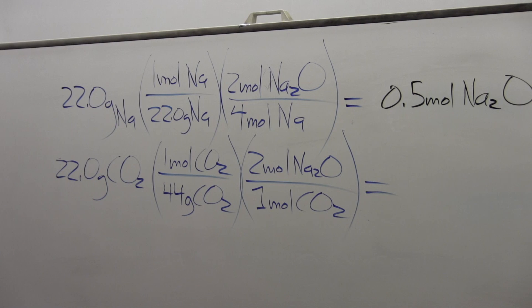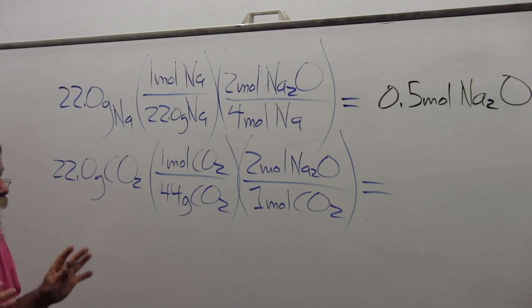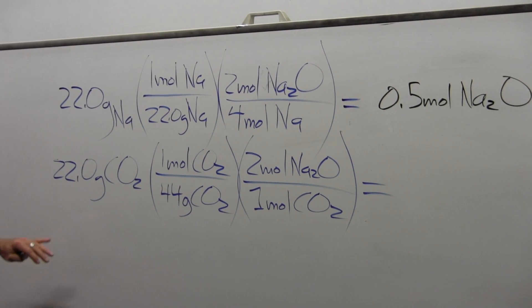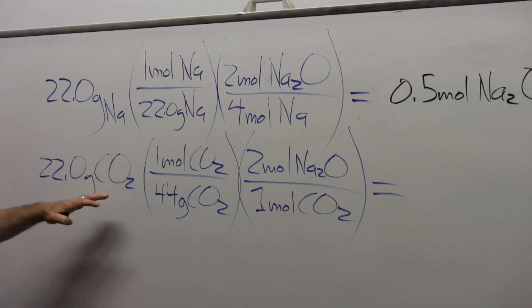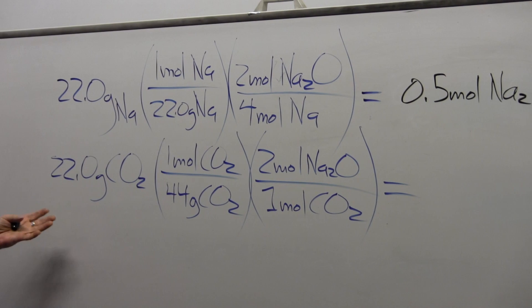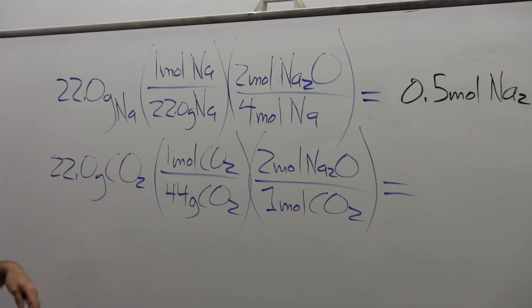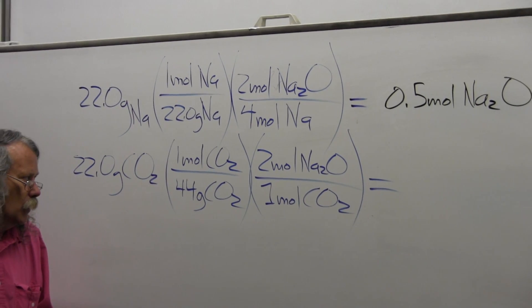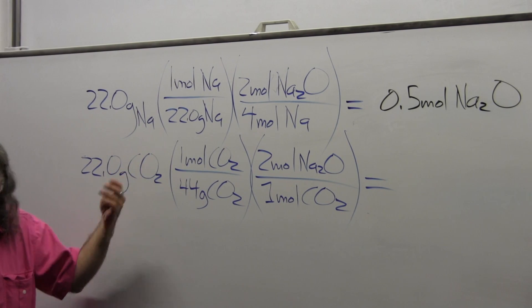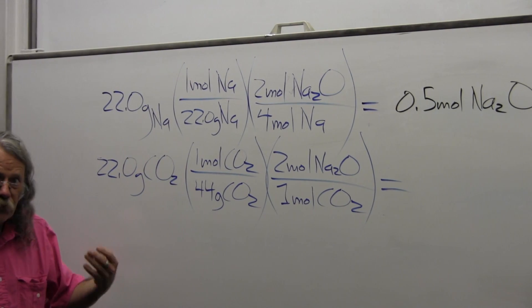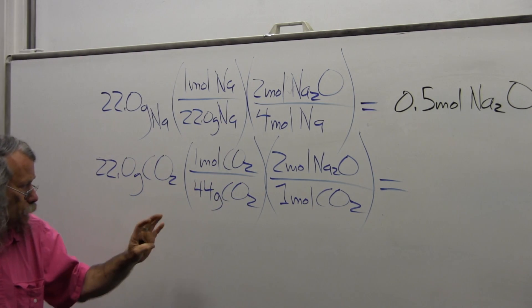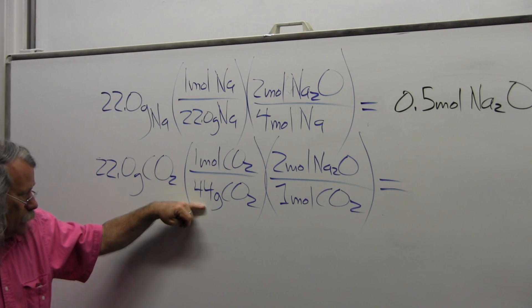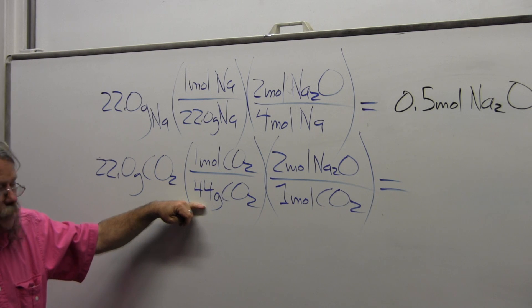Now we do the exact same setup with carbon dioxide. I start with the 22 grams of carbon dioxide. I'm going to go from grams of carbon dioxide to moles of carbon dioxide, so moles of carbon dioxide goes in the numerator for the first term.